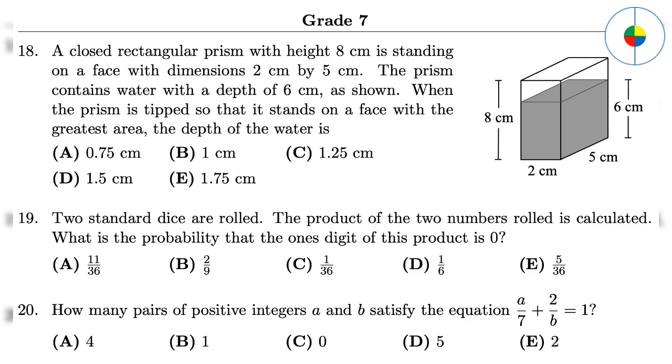Question 19: This is a permutation with repetition. Total variation is 6 times 6 equals 36. Which combinations have 0 in the 1s? 2 times 5, 4 times 5, 6 times 5, or 5 times 2, 5 times 4, 5 times 6. So the answer is 6 over 36, which is d.